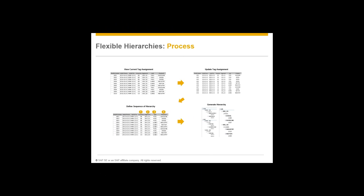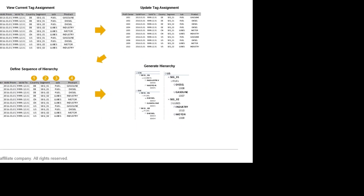What we see here is the current tag assignment, using a profit center example. You've got the things everybody knows — the valid from date, the valid to date, and the segment in that profit center — and we've added a couple of tags: line of business and product line. You can go in and update those product lines as things change. Then you set up the sequence of the hierarchy: in this example, the top node is country, the next is segment, then line of business, and fourth is product. Press a button and you get the hierarchy on the right: the top node is China, Germany, US — that's country — then the segment, then line of business, then product. All from pressing one button.